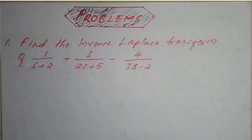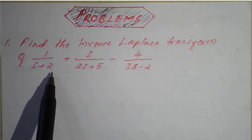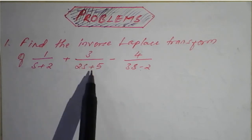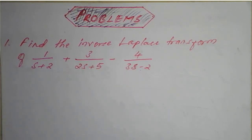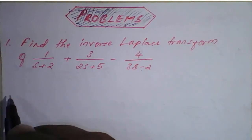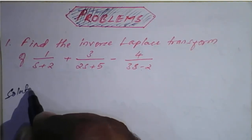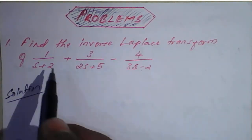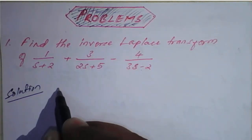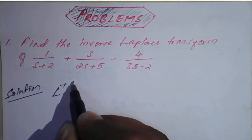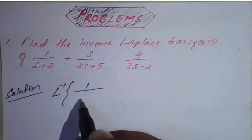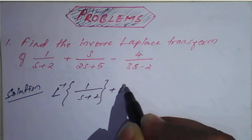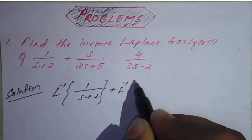Solution. So, 1 upon s plus 2 is nothing but 1 upon s plus a. We need to re-manipulate the other terms. We will find the inverse Laplace transform of the given question. Applying linear property directly: L inverse of 1 upon s plus 2, plus L inverse of 3 divided by 2s plus 5.